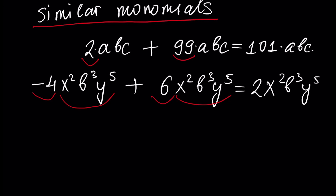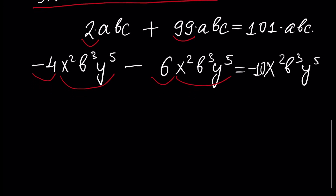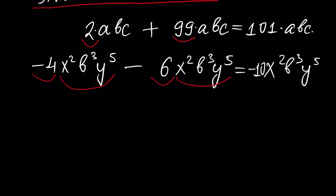For example, in the case of subtraction, minus 4 minus 6 would be minus 10. So, if you want to add and subtract monomials, only similar monomials can be added and subtracted.